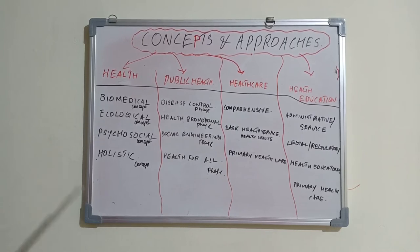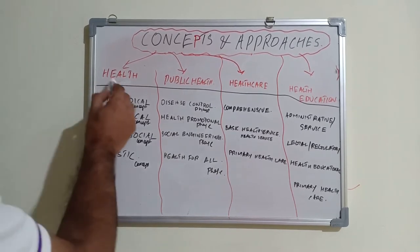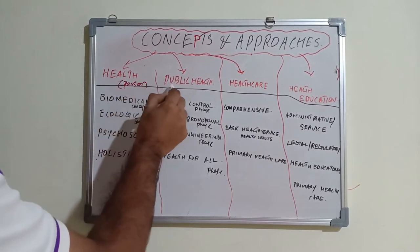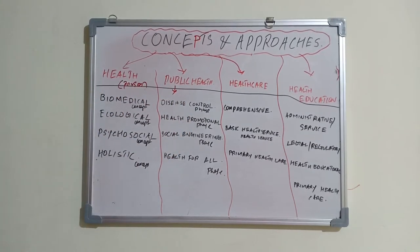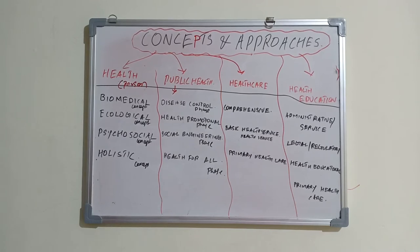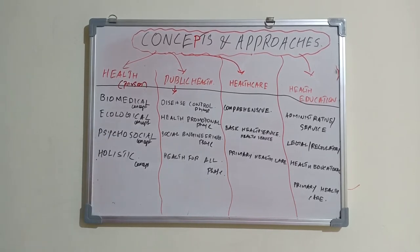We have studied this in detail: biomedical concept, ecological, psychosocial, and holistic. This is basically about a person's health. Biomedical is nothing but absence of disease — like germ theory, if the person is disease-free they are completely healthy. Ecological points to the balance between the person and their environment. Psychosocial involves psychological and other social factors. Holistic covers everything including the spiritual aspect.